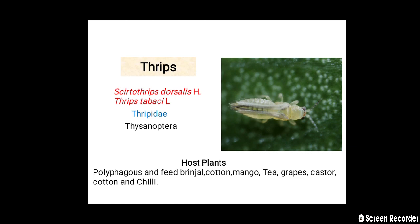Both species belong to family Thripidae and order Thysanoptera. This is a polyphagous pest and feeds on brinjal, cotton, mango, tea, grapes, castor, and chili.